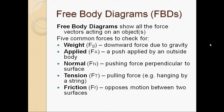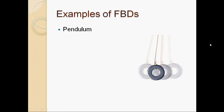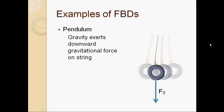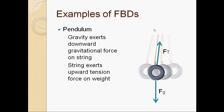Let's look at some free body diagram examples. First, a pendulum — an object hanging from a string and swinging. Two forces act on it: gravity pulling downward, labeled FG, and a tension force from the string pulling it upward, labeled FT. If gravity were the only force, it would plummet downward, so the tension force holds it up.